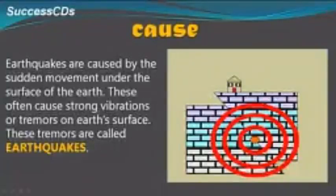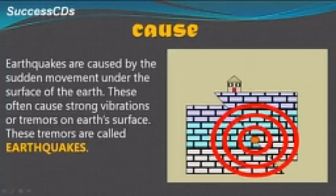Earthquakes are caused by the sudden movements under the surface of the earth. These often cause strong vibration or tremors on the earth's surface. These tremors are called earthquakes.